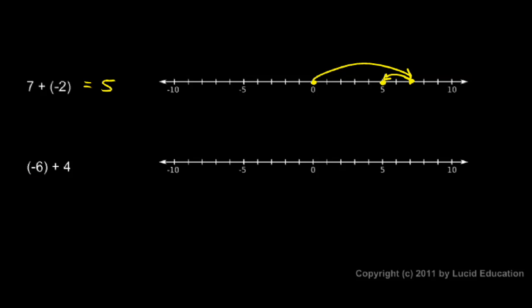Let's look at this example: negative 6 plus 4. The negative 6 means we go 6 to the left. So we start at 0 and go to there, 6 to the left. And then the positive 4 means we go from this point 4 to the right. So we go like that and we end up right there.